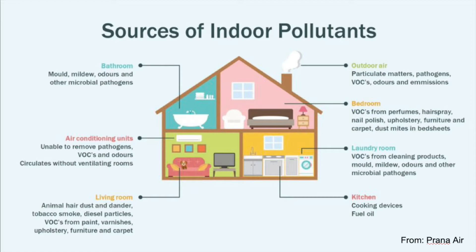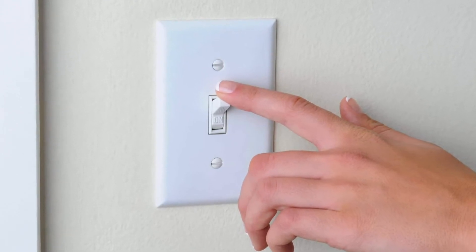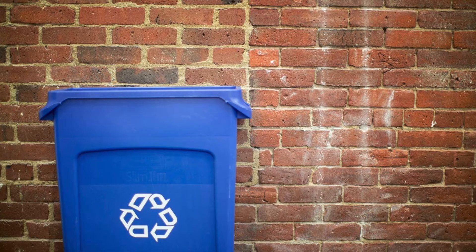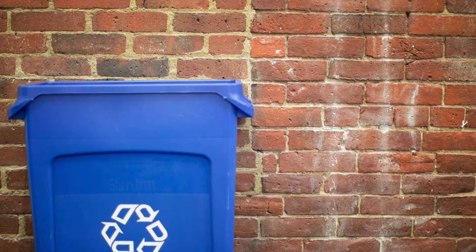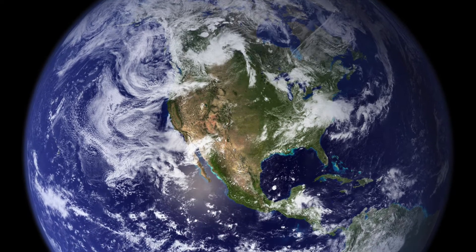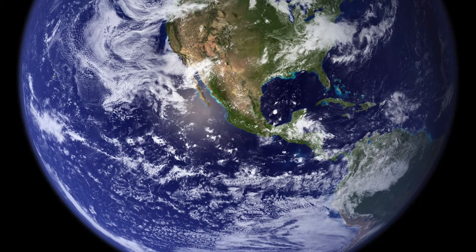Dust storms carry dust in the wind over the land and can cause severe air pollution, making it hard for people to breathe and see. To reduce air pollution, we can take public transportation, turn off lights, recycle so there's not as much waste, and be mindful of what we do so we can take care of the planet we live on.